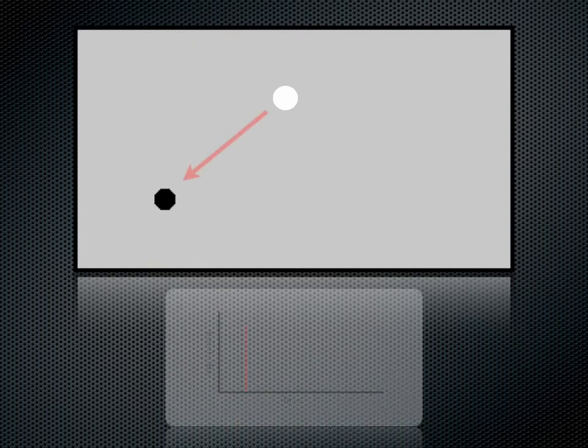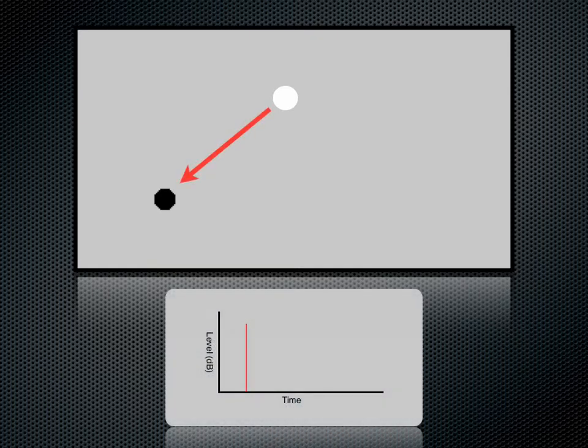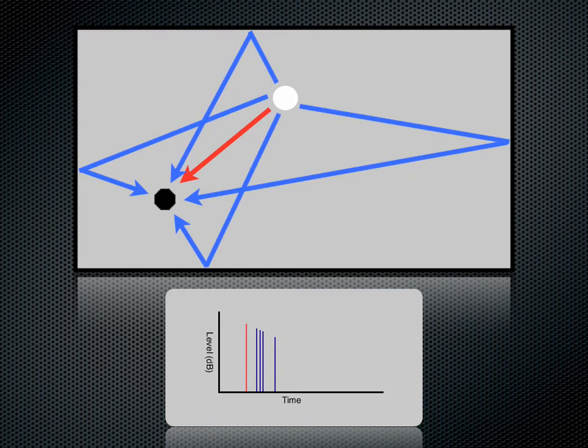Here's a demonstration. This is an enclosed space with a sound source and a listener inside. The white dot represents the sound source, and the black dot represents the listener. As we learned earlier, sound is omnidirectional — when a sound is emitted in a room, it travels in all directions. The first sound that reaches the listener is the direct sound. The rest of the sounds traveling in all the other directions gets reflected back by the first surface to the listener. These are the first reflections.